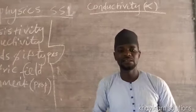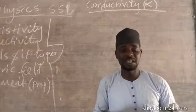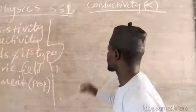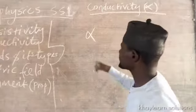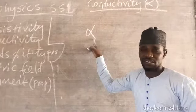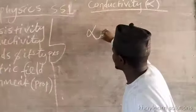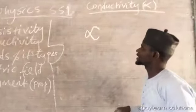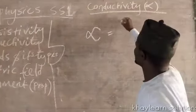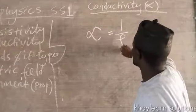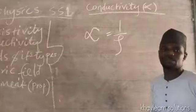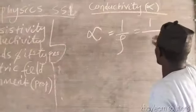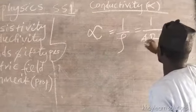Since conductivity is the reciprocal of resistivity, the formula takes that effect. Conductivity has a symbol, sigma (σ). Conductivity equals 1 over resistivity (ρ), which is the same as 1 over (AR/L).